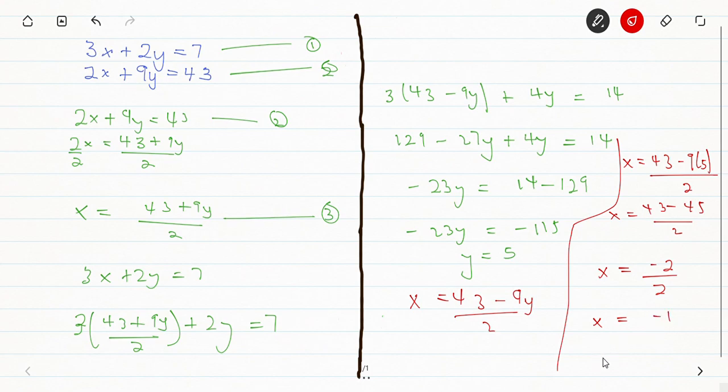Now let's put it back into any of the equations to see whether our answer is right. When we put it in the first equation, I'm going to get 3 times x, which is minus 1, plus 2 times y, which is 5.